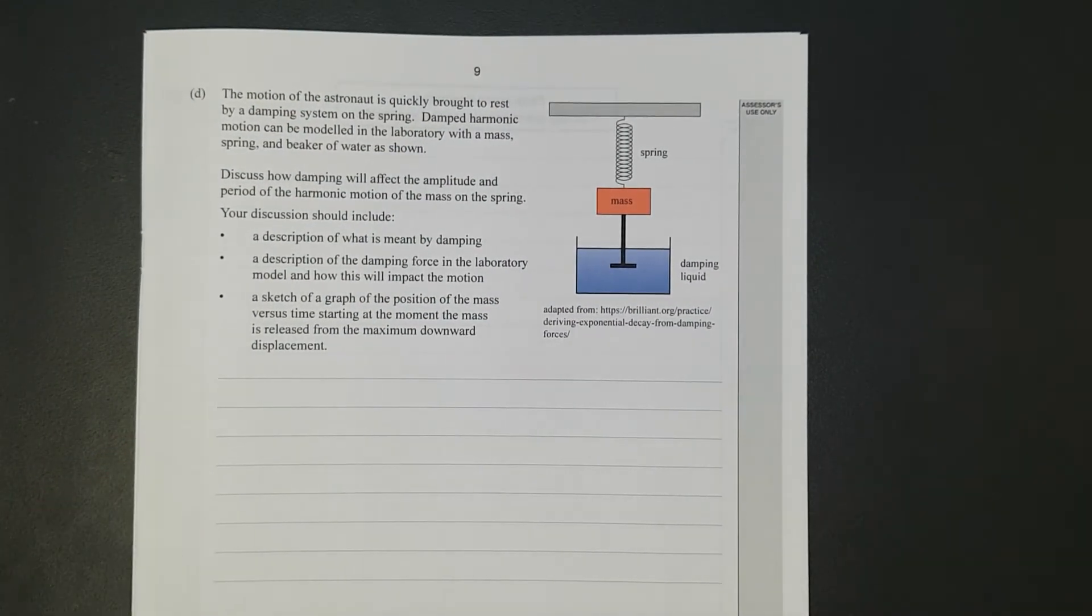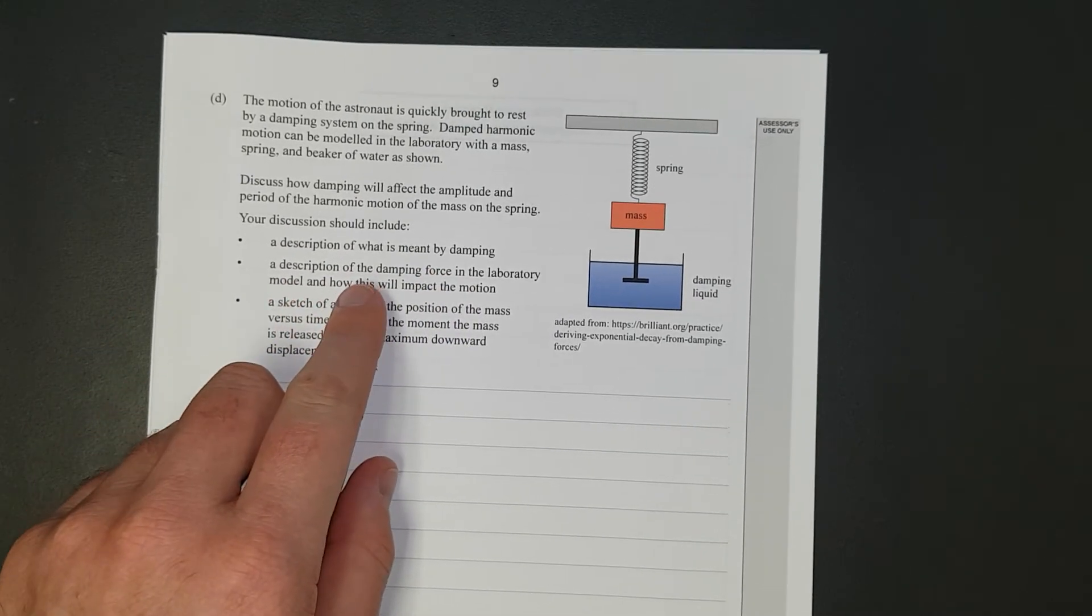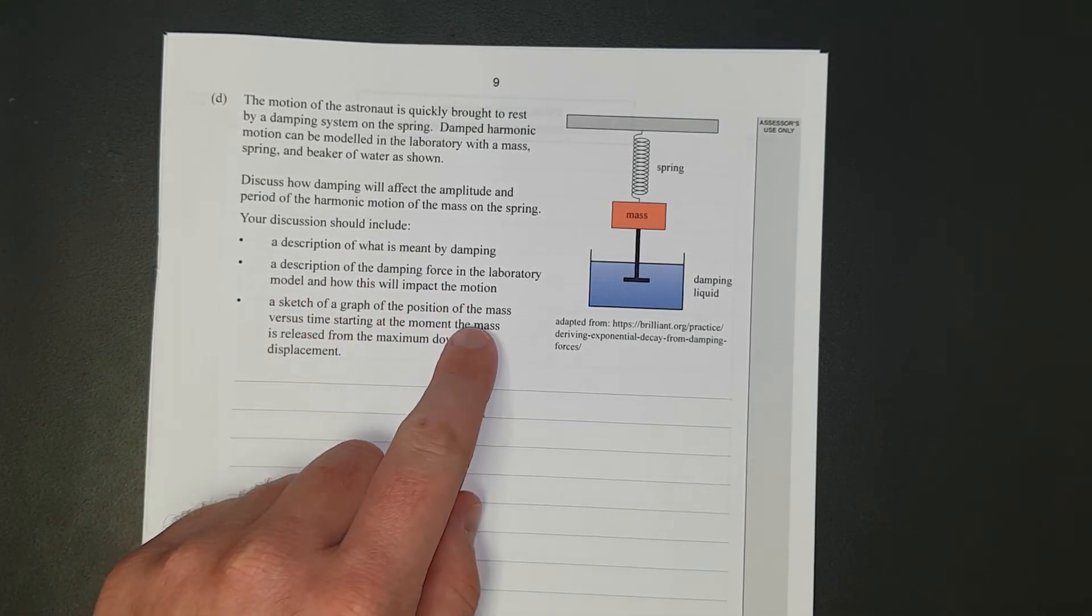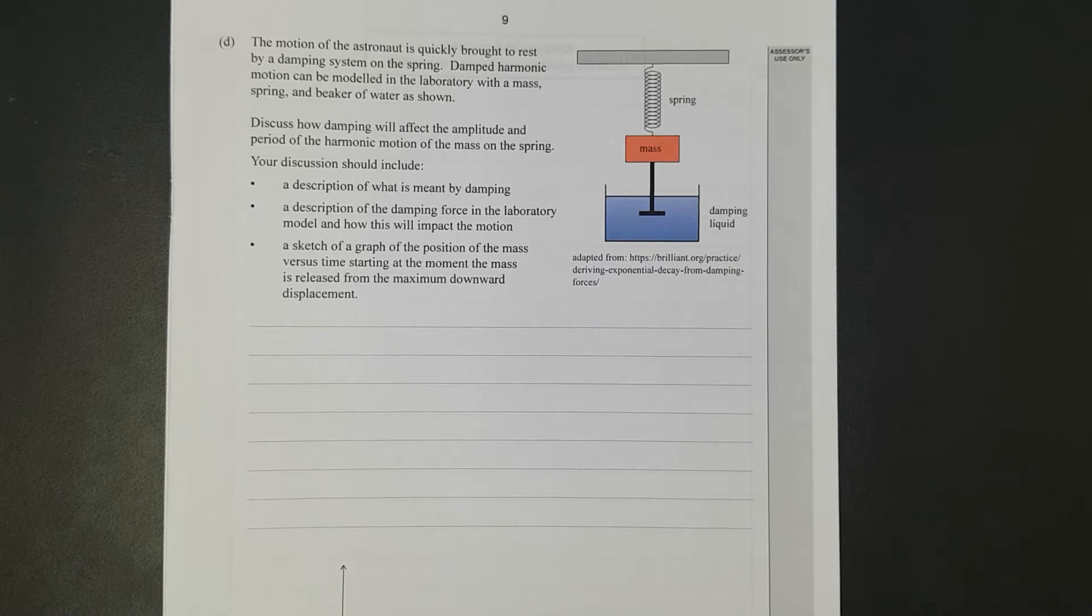Next question: the motion of the astronaut is quickly brought to rest by a damping system which can be modeled in the laboratory with a mass, spring, and a beaker of water. Discuss how damping will affect the amplitude and period of the harmonic motion of the mass of the spring. Your description should include a description of what is damping, how it works, sketch a graph of everything.